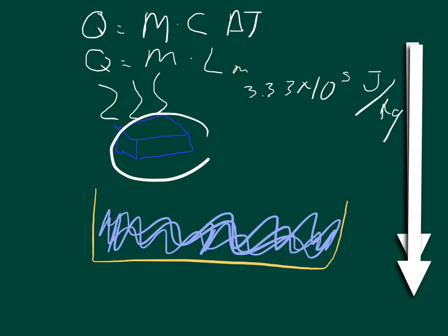Notice that this unit has no kilogram times Celsius and no kilogram times Fahrenheit, because we're not looking at a change of temperature as we are with specific heat. Water freezes and melts both at zero degrees Celsius, so the amount of energy it takes to move from frozen water at zero degrees to liquid water at zero degrees is 3.33 times 10 to the 5th joules per kilogram.